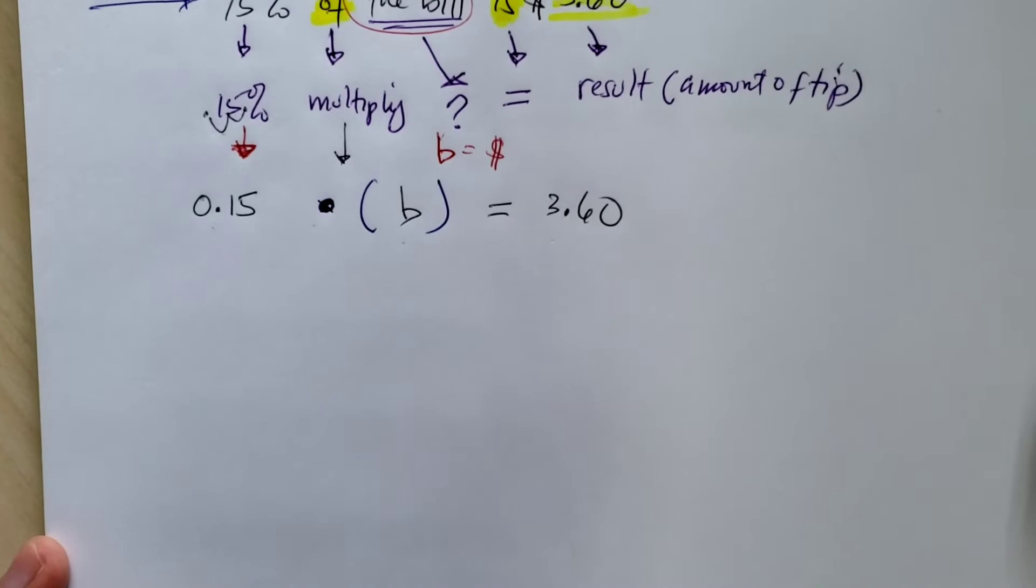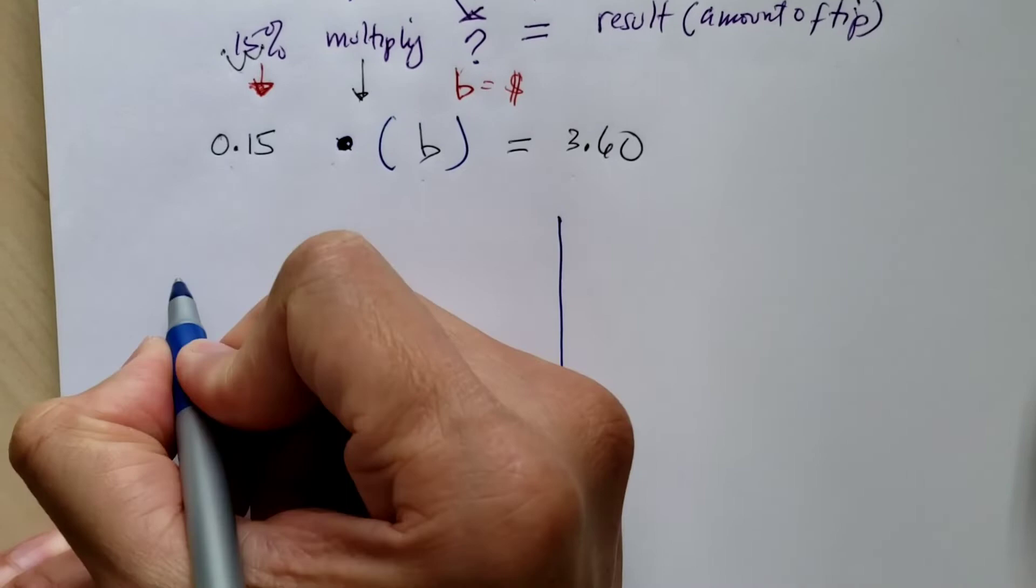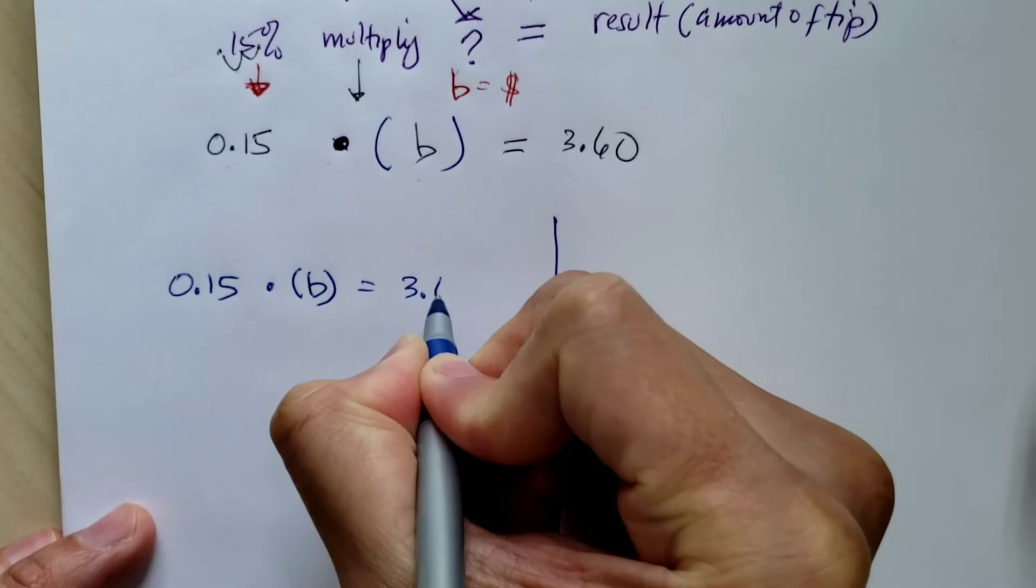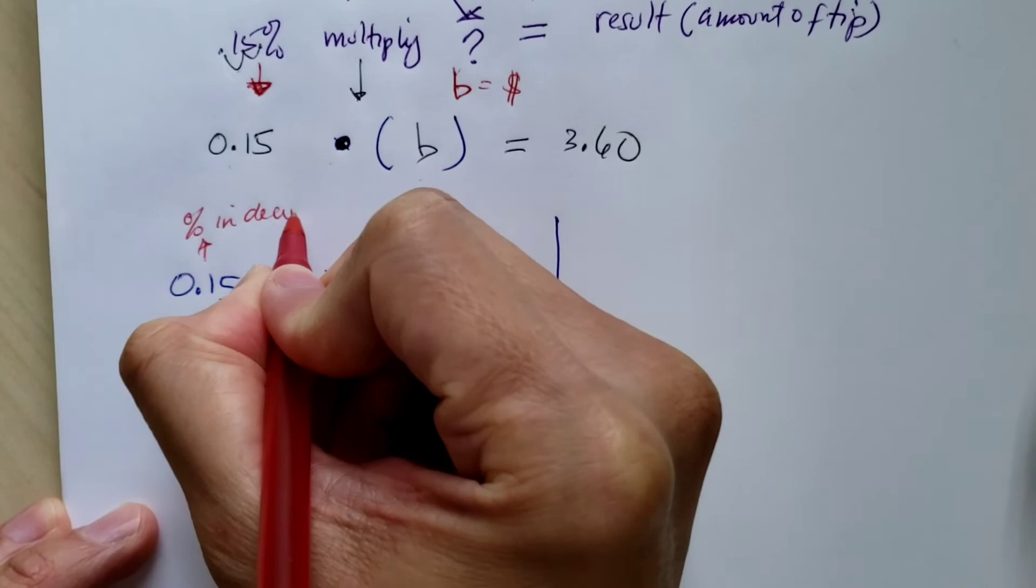So let's answer this problem. There's two ways to solve this. The first way is what we talk about in class. So if we know that 0.15 times B equal to 3.60, we know this was the percent in decimal.